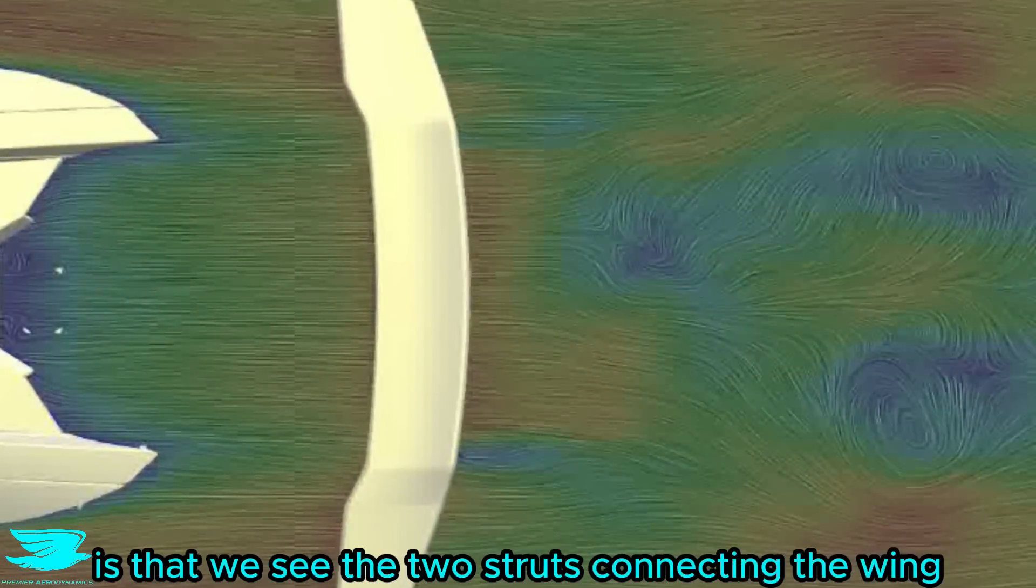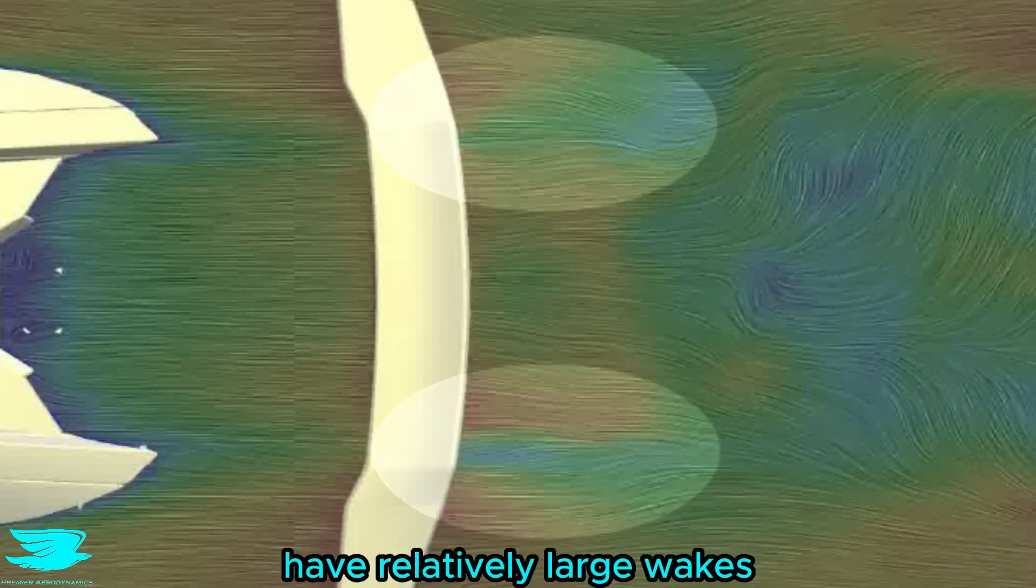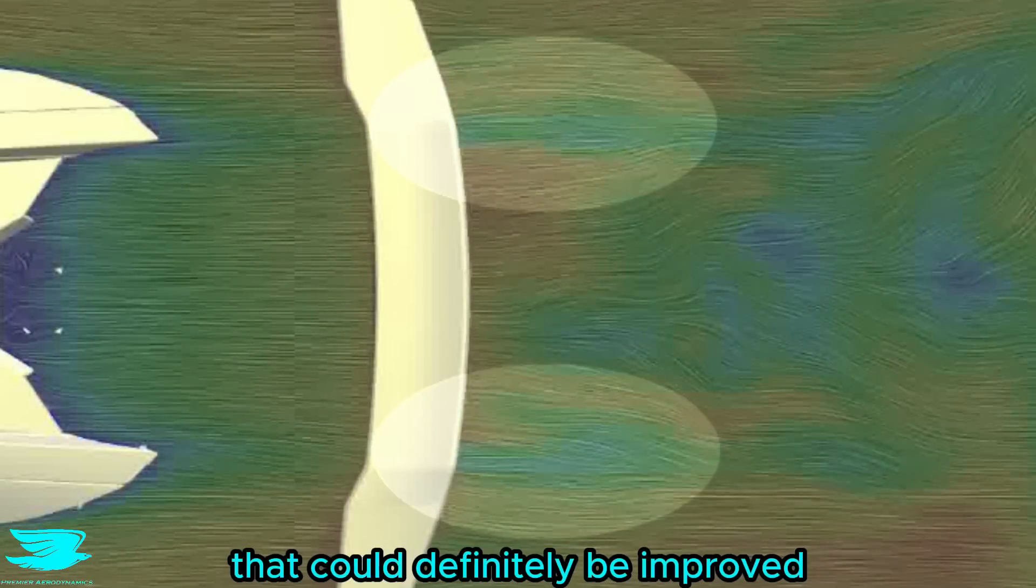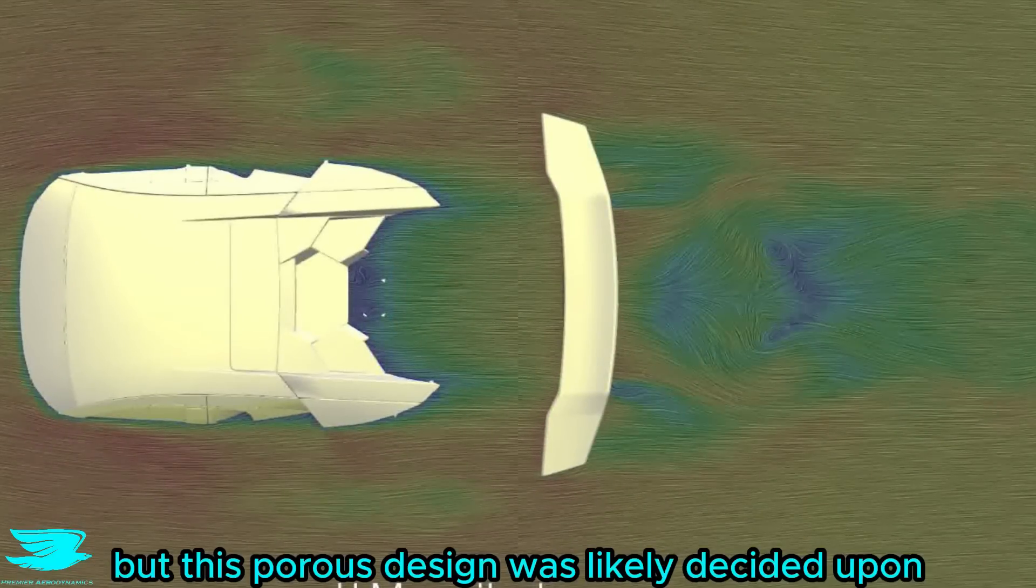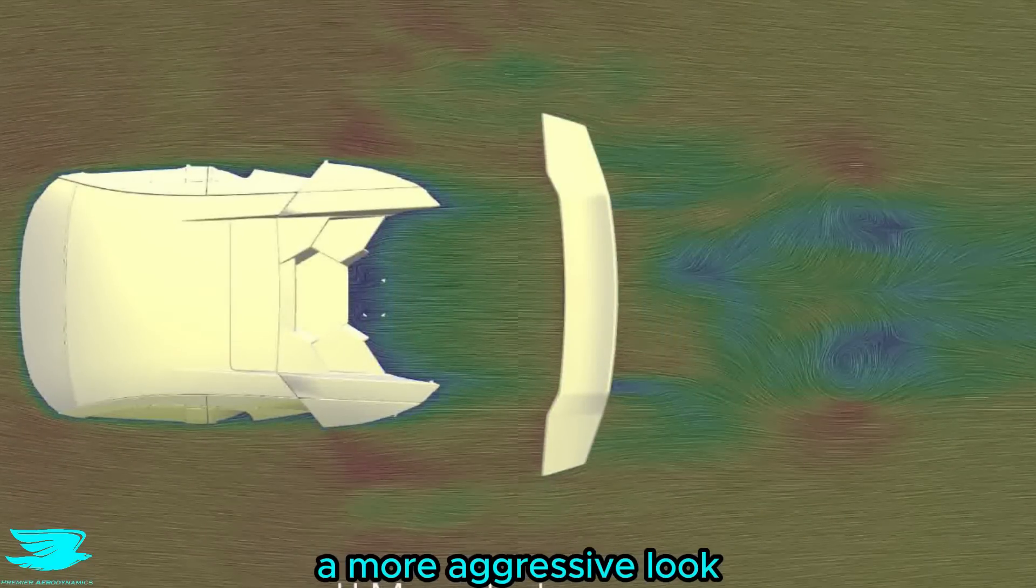One thing that could be improved is that we see the two struts connecting the wing have relatively large wakes. That could definitely be improved by making the struts more streamlined and not so porous, but this porous design was likely decided upon to give the Murciélago a more aggressive look.